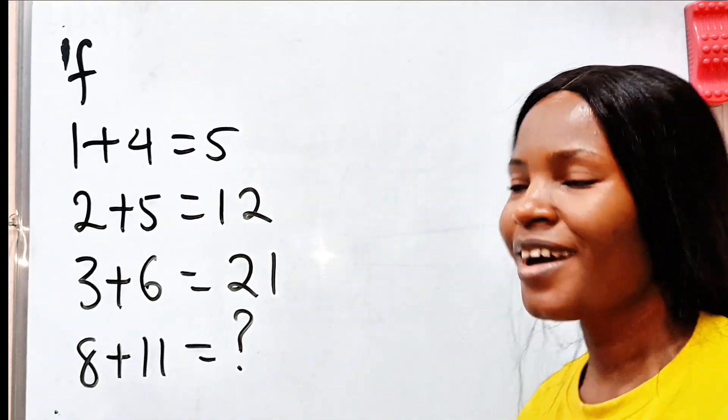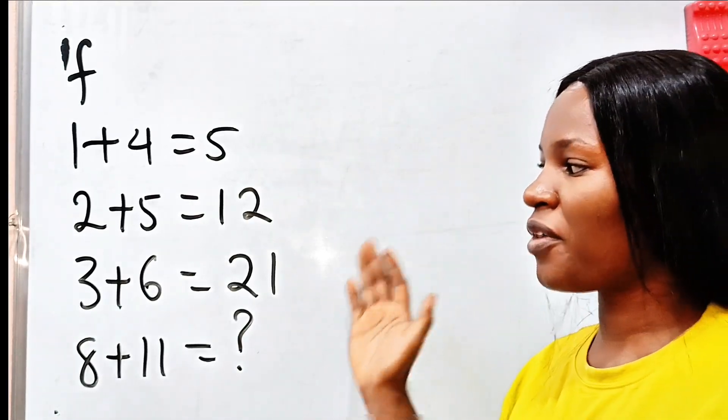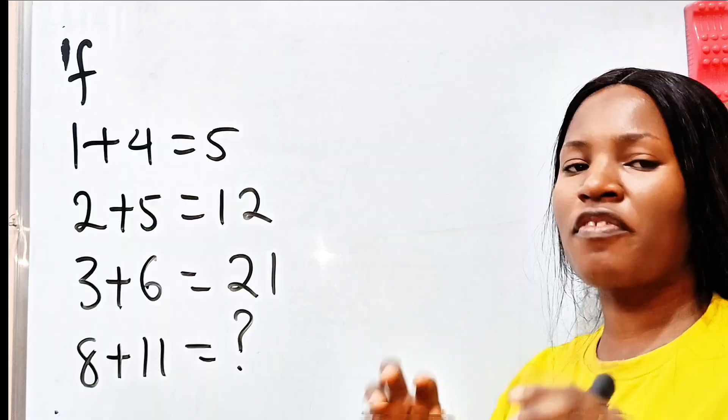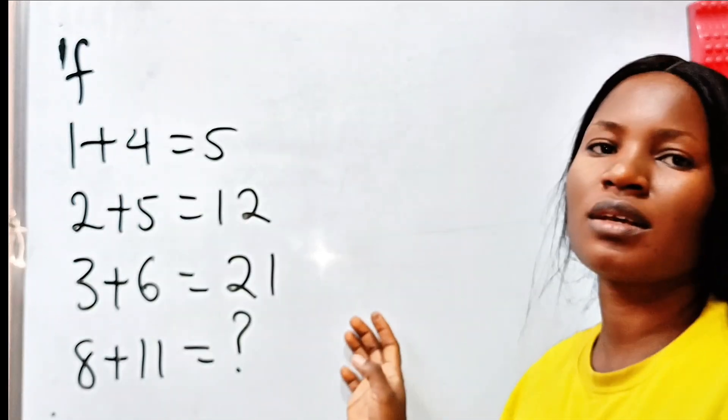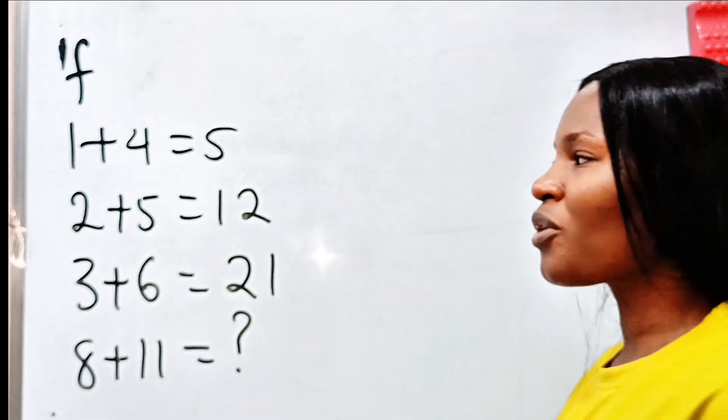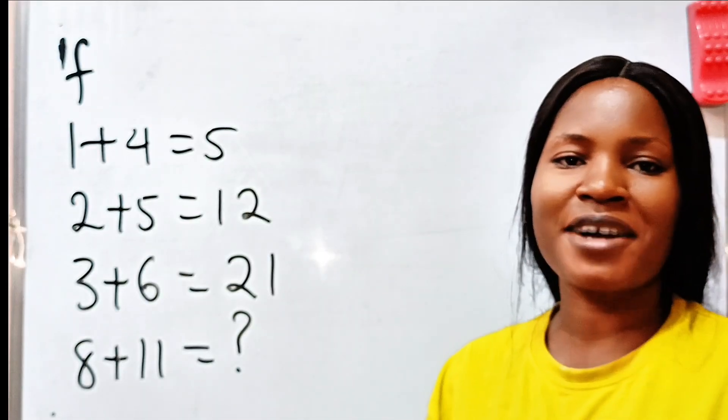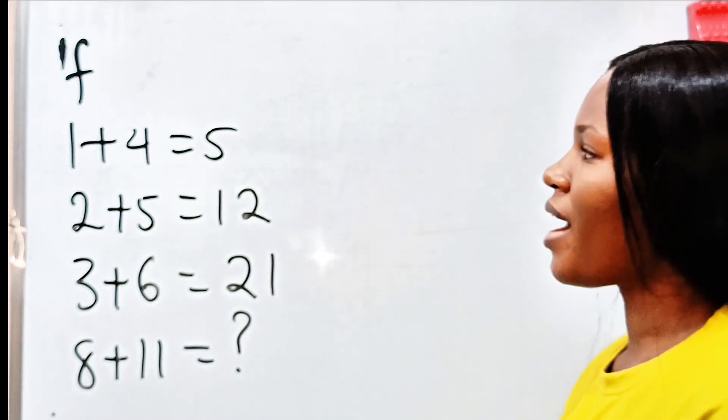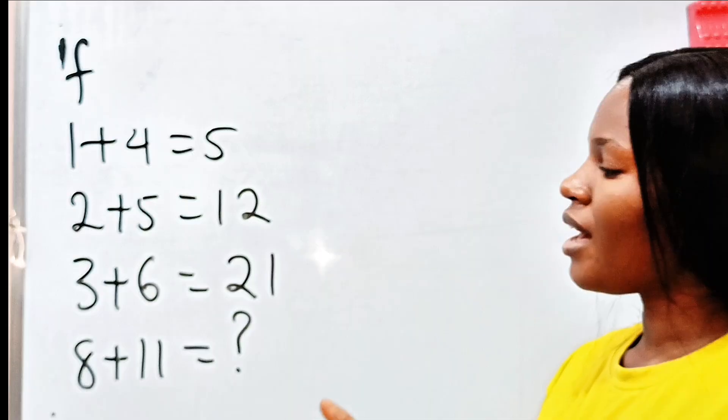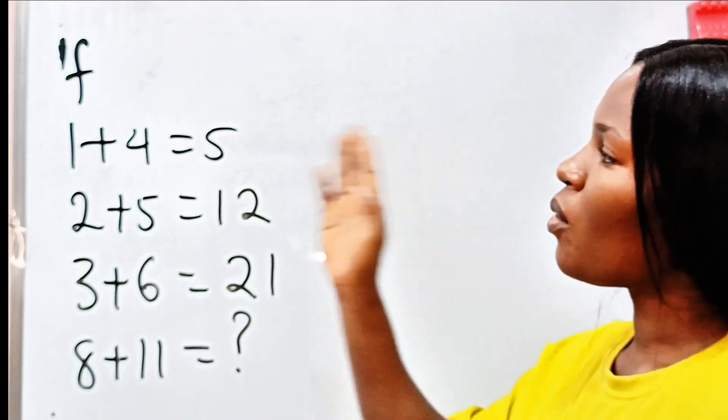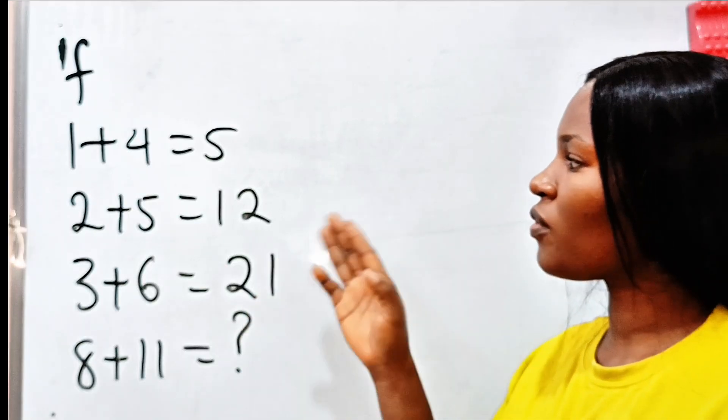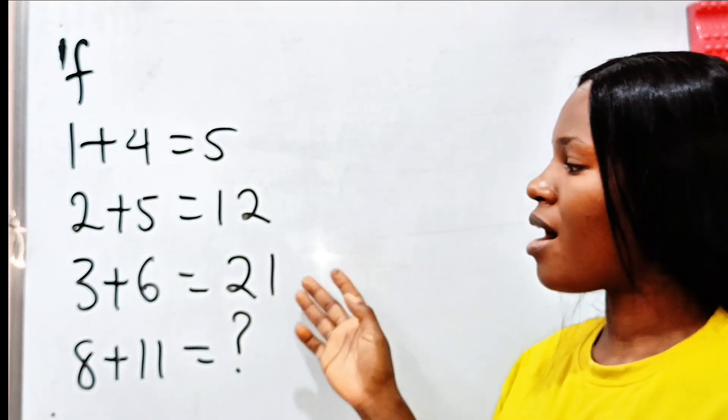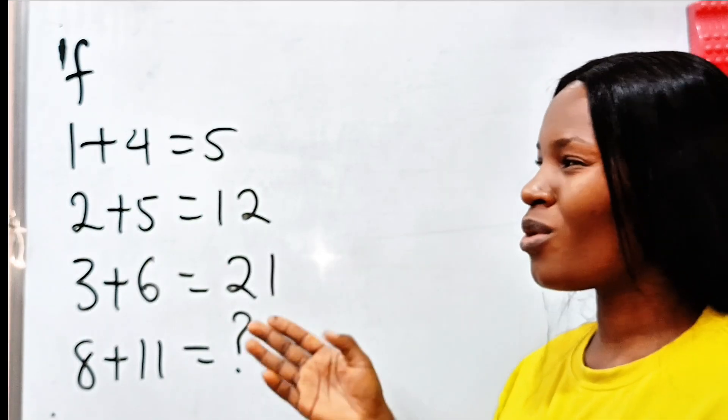How smart are you? 99% failed this. Okay, let me just be fair. 70% failed this because they overlooked something on this question. This is an IQ test and you are welcome back to my channel. So we are asked to find 8 plus 11 if 1 plus 4 equals 5, 2 plus 5 equals 12 and 3 plus 6 equals 21.